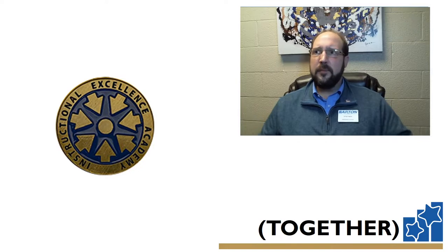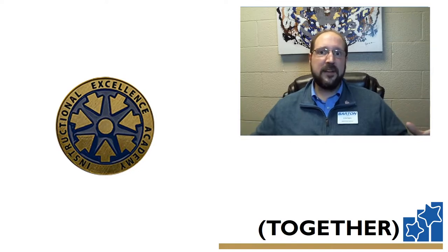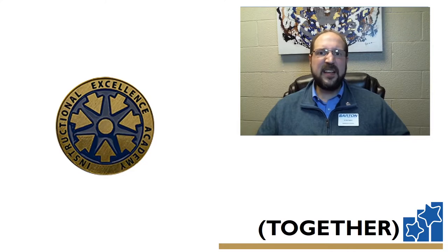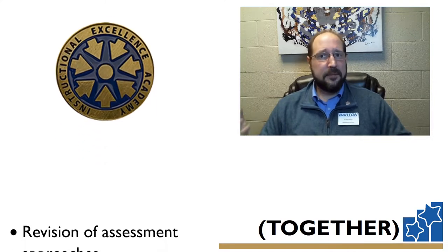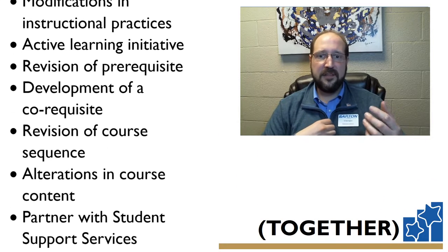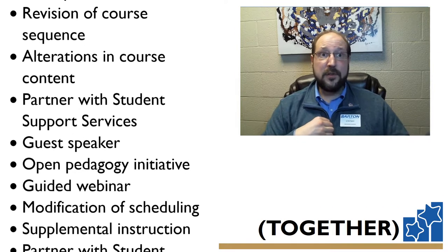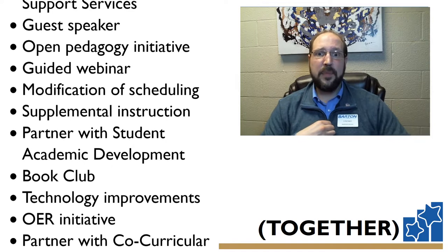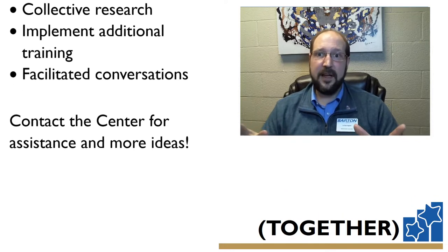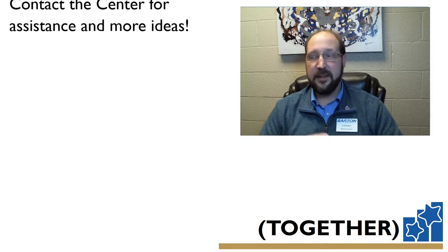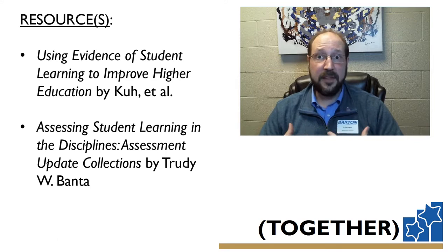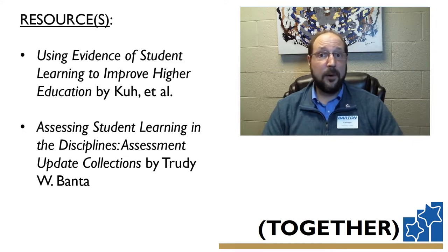So anyway, you see an issue with the program learning outcome. You've figured out who the we is representative of — not excluding anyone, think in terms of adjuncts, everybody else. What are some things we can collectively do together? Well, some examples: you might look at revision of assessment approaches, modifications in instructional practices, an active learning initiative, alterations in course content. You might partner with student services, get a guest speaker, open pedagogy initiative. You might partner with student academic development or a co-curricular group, do some collective research on the topic, get facilitated conversations. Definitely tap into the center — they're definitely a good resource. Professional development is something you should definitely consider if there's an issue.